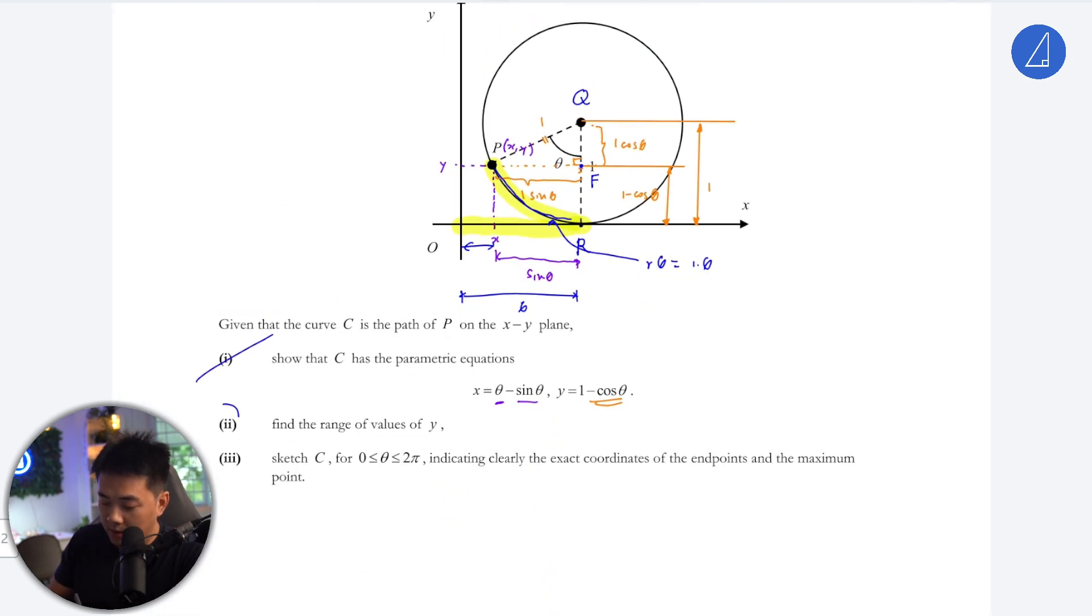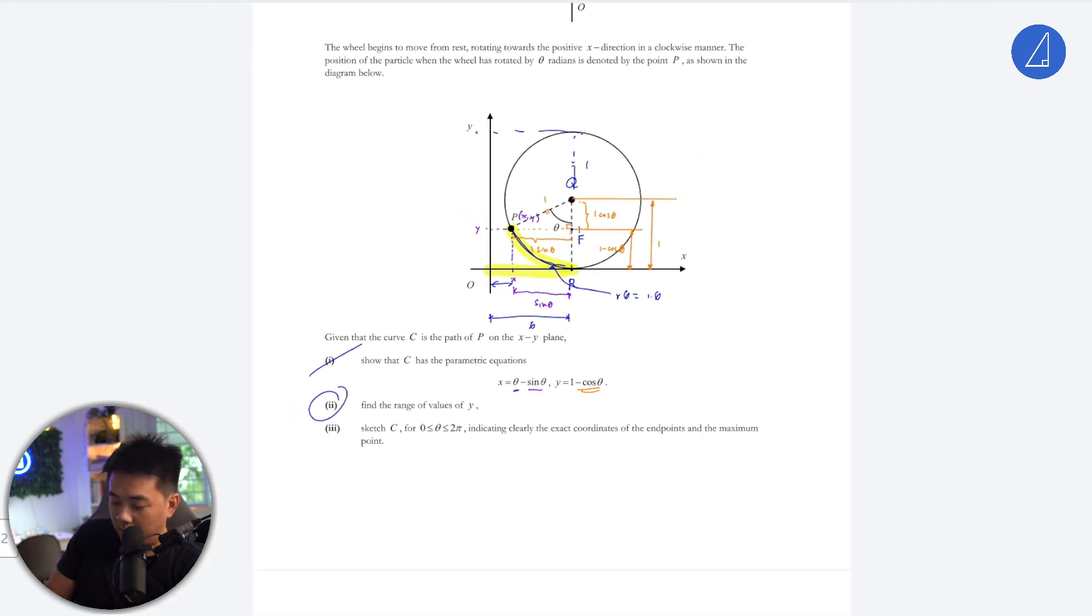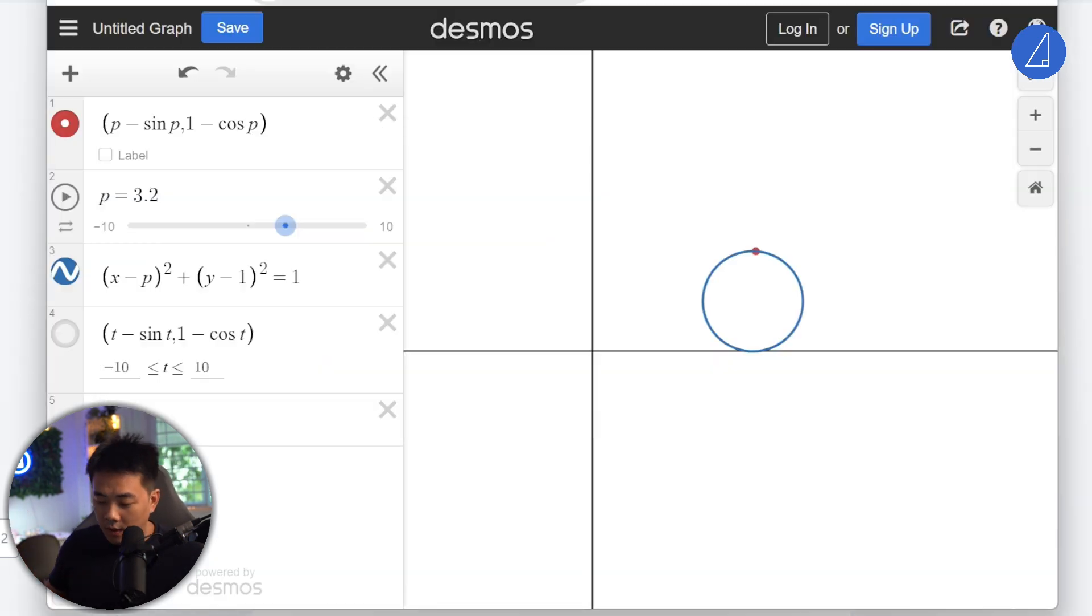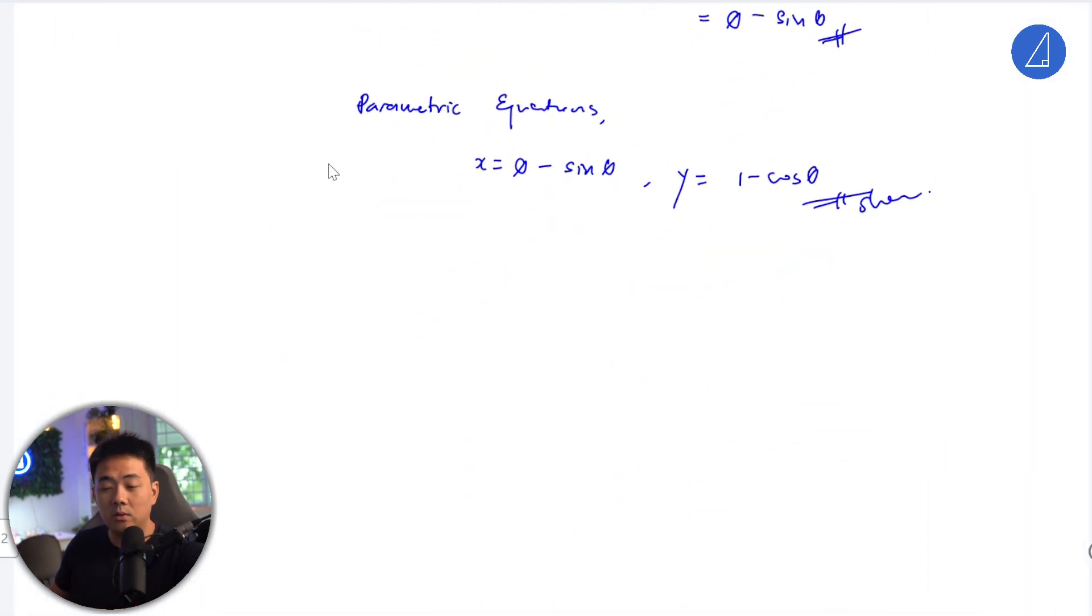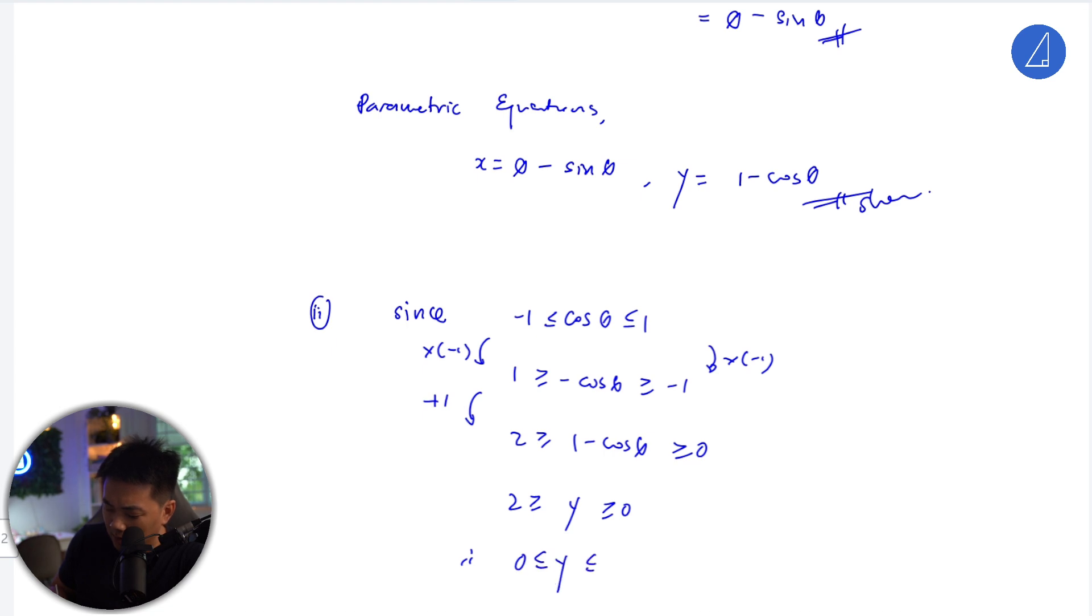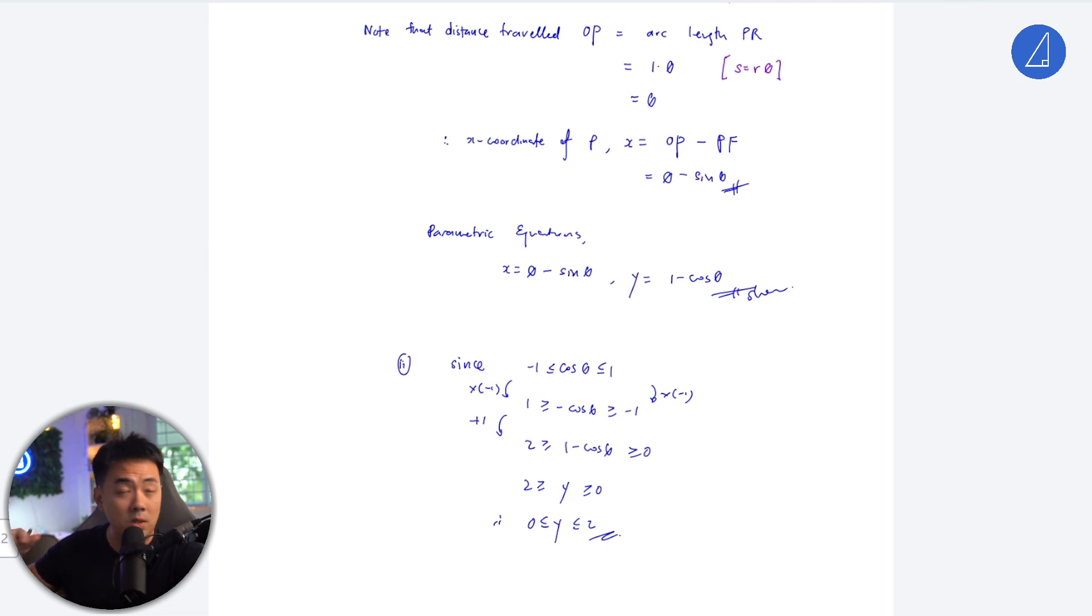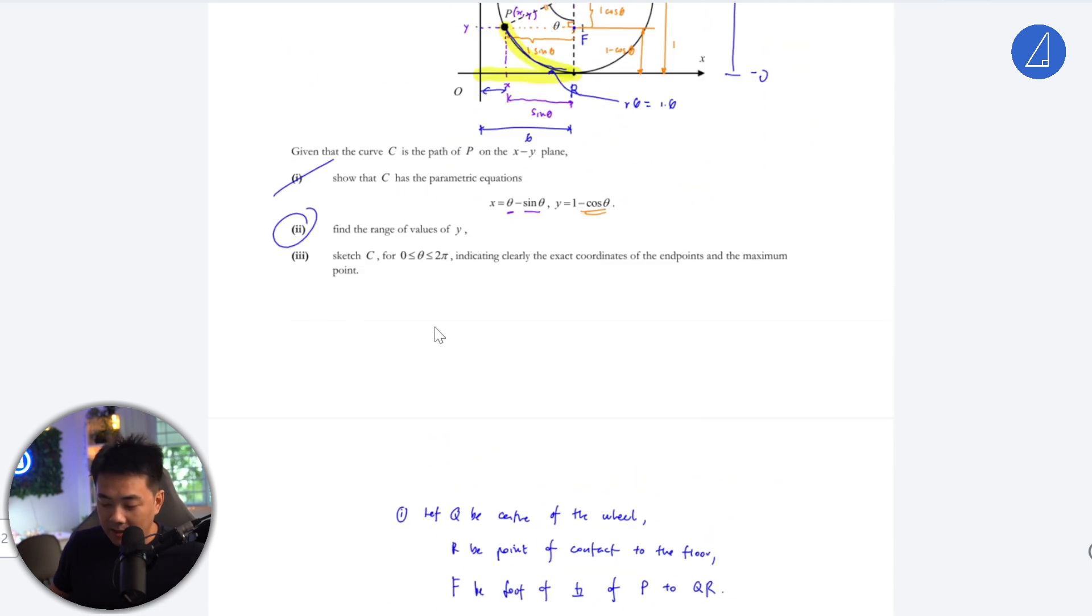Find the range of value of y shouldn't be an issue. Because the y value, this is 1, so the y value will range from 0 and 2. Because as you roll over, your y value will definitely be 0 to 2. You could actually just use trig as well. You know that cos θ will be between -1 and 1. So meaning to say, negative cos θ will also be between -1 and 1. Then you just add 1 both sides. So you multiply by negative 1, you flip the sign. You add a 1. You just add 1 - cos θ is between 0 and 2. Hence, 0 ≤ y ≤ 2.